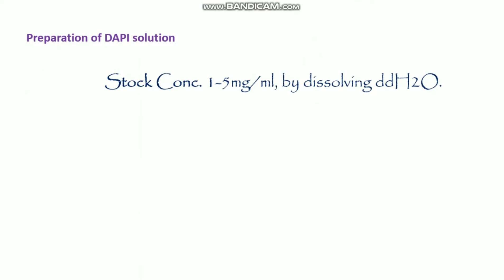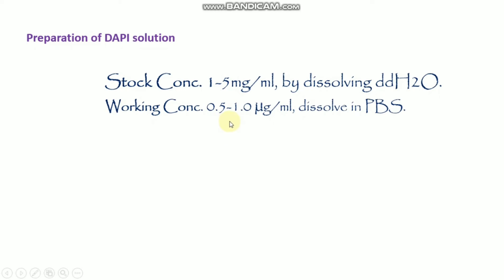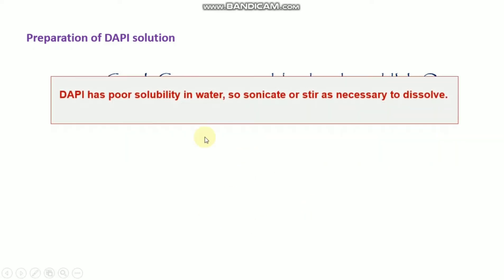For DAPI staining, you have to prepare the stock solution first. The stock concentration should be 1 to 5 mg per ml by dissolving in double distilled water. The working concentration should be 0.5 to 1 microgram per ml, dissolved in PBS. DAPI has poor solubility in PBS compared to ddH2O, and also poor solubility in water, so sonication may be needed.